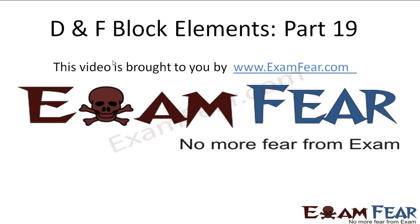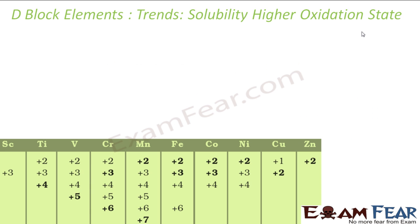Hello friends, this video on DNF Block Elements part 19 is brought to you by examfier.com. We will talk about the solubility or stability of the higher oxidation state. Transition metals form higher oxidation states with oxygen and fluorine because they are highly electronegative and small in size. So you get higher oxidation states of transition metals when they are bonded to fluorine or oxygen.